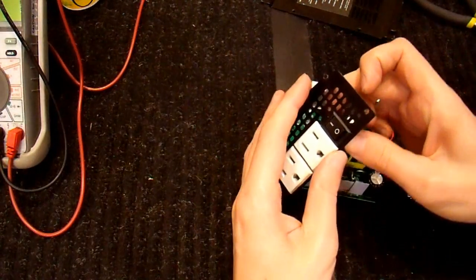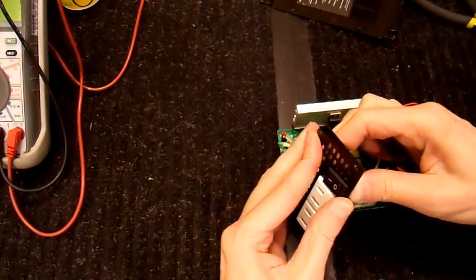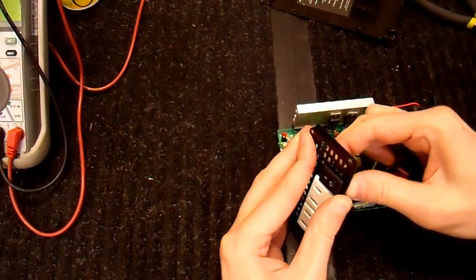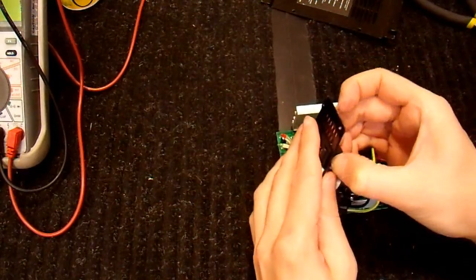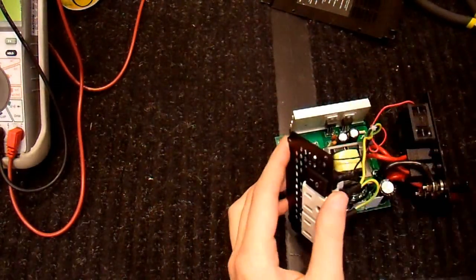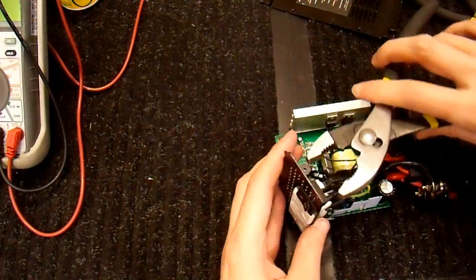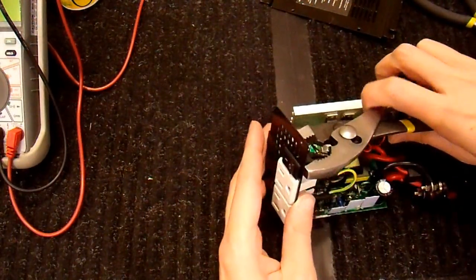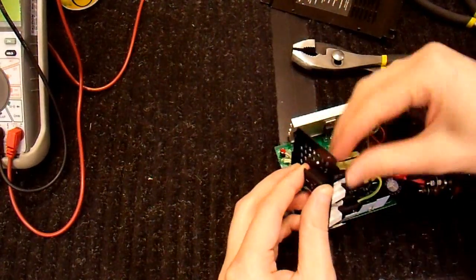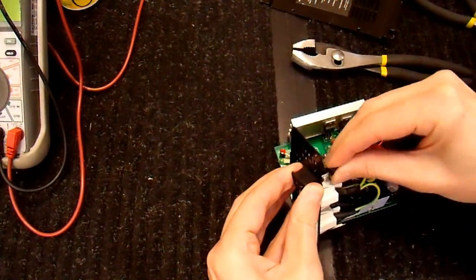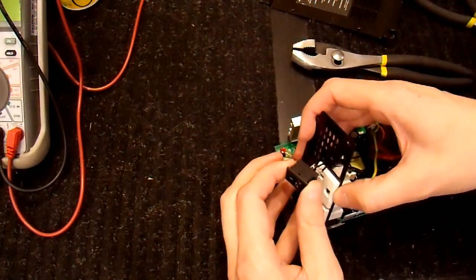Looks like about the same cutout size and hopefully it is. So we'll remove this switch. Looks like you just press the tabs in and push it out. Pliers would make this easier wouldn't it? Get some mechanical advantage on this thing. There we go. Unplug the wires. I can't unplug them. They're soldered on. That's too bad.